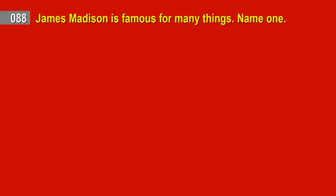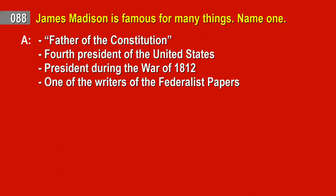Question 88. James Madison is famous for many things. Name one. Answer: Father of the Constitution. Fourth President of the United States. President during the War of 1812. One of the writers of the Federalist Papers.